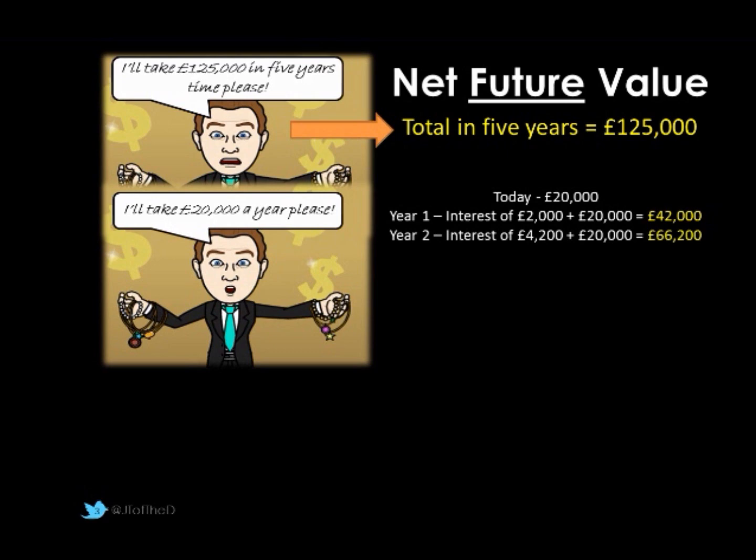At the end of year two, this has now increased, and we've got compound interest happening. At the end of year one we had £42,000, so our 10% interest is based on that. So we'd actually get interest of £4,200, our third instalment of £20,000, all on top of the initial £42,000, giving us a bank account balance of £66,200.